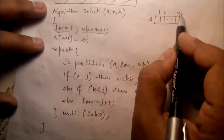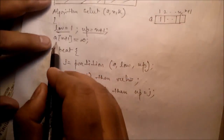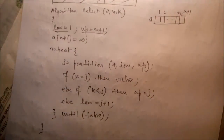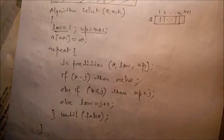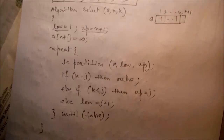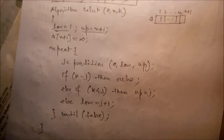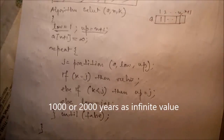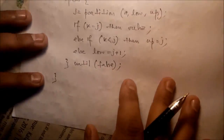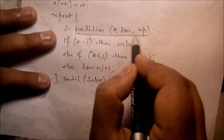In the algorithm, low is set to 1 and up is set to n+1. The array position a[n+1] is set to an infinite value — a sentinel. An infinite value is simply a very large number. For example, if you are storing human ages, the maximum might be 150–200, so setting 500 as the infinite sentinel works. The appropriate infinite value depends on the context of your data.